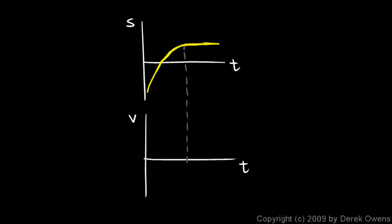Let's start with the part that's easy. Right here, the graph is flat, so all along that section the slope of the s graph is zero. So the velocity graph will have to have a value of zero during that time interval. In the earlier region, the slope at the beginning is pretty steep — that's a large value for the slope — so the v graph is going to start up kind of high. Then as time goes on, the slope gets less and less steep and eventually reaches zero, meaning the v graph comes down and eventually hits zero.